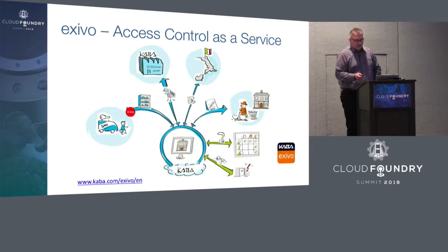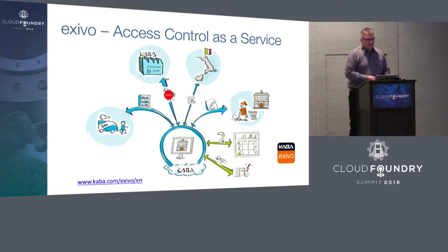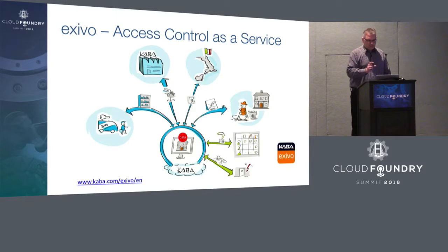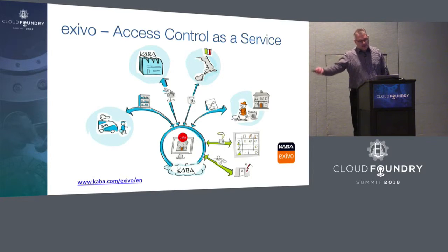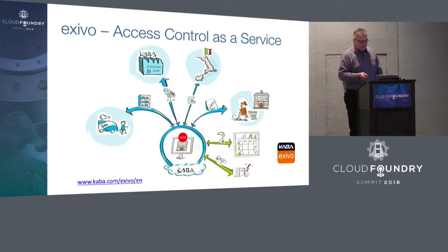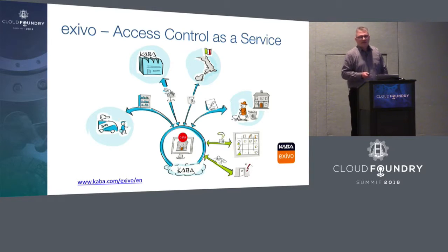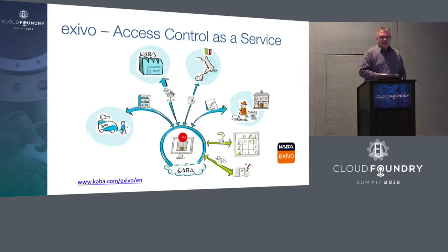By keeping the data central, it was much easier to not lose any data, and to give Kaba's partners access to the same data as the customer has — the same data Kaba uses to provide keys, locks, and all the security systems. It is a complete web-based solution. You don't need any server, hardware, or software on premise. The only thing you need is a small box which keeps the system running when the internet connection goes down, as the whole solution runs in the cloud.